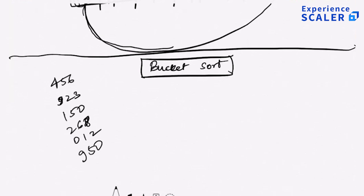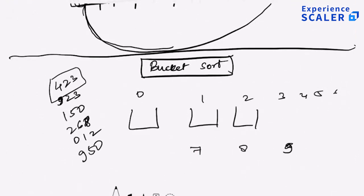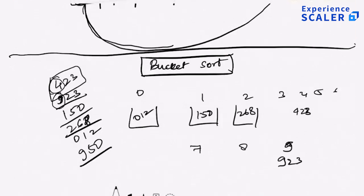Imagine I create 10 buckets — bucket 0 through 9 — corresponding to the most significant digit of the number, specifically the hundreds place, assuming most numbers are smaller than 1000. If I do that, then 423 goes in the fourth bucket since the most significant digit is 4. Assuming the most significant digit we look at is the third digit from the back: 923 goes in the 9 bucket, 150 in the 1 bucket, 268 in the 2 bucket, 012 in the 0 bucket, and 950 in the 9 bucket. If I then sort the numbers within each bucket and pick numbers bucket by bucket and append them, I get the entire array sorted.